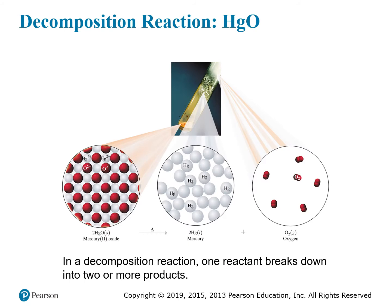For the mercury oxide example, if you heat it or run an electrical current through it, you provide enough energy for the mercury oxide structure to break apart. The mercury atoms come back together and the oxygen atoms come back together, forming liquid mercury and oxygen gas. The oxygen gas forms bubbles and escapes into the atmosphere.